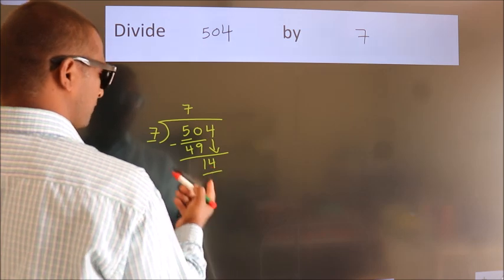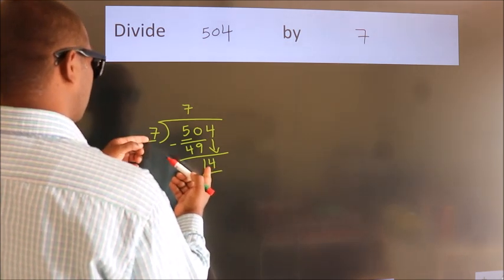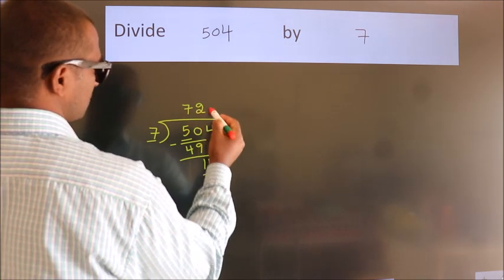So, 14. When do we get 14? In 7 table. 7 twos, 14.